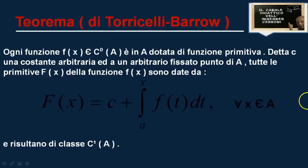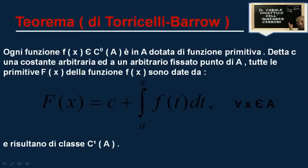Andiamo a enunciarlo e poi lo andiamo subito a dimostrare. Ed eccolo dunque il teorema di Torricelli-Barrow, che afferma che ogni funzione f di x appartenente a C0 in A, ovvero continua nell'intervallo A, è in A dotata di funzione primitiva. Detta c piccolo una costante arbitraria e a piccolo un arbitrario fissato punto di A, tutte le primitive F grande di x della funzione f piccolo di x sono date dalla formula: F grande di x è uguale a c più l'integrale fra a e x di f di t dt, comunque si fissi x appartenente ad A. Inoltre queste primitive risultano di classe C1 in A, cioè continue e derivabili in A.